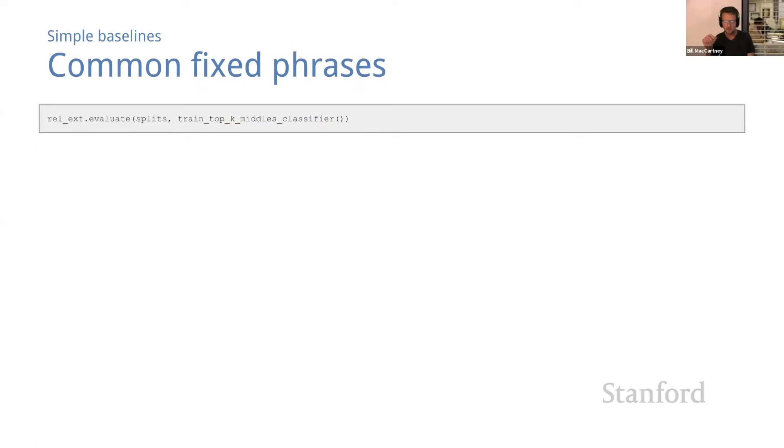Now that we've identified the most common middles for each relation, it's straightforward to build a classifier based on that information—a classifier that predicts true for a candidate KB triple just in case the two entities in the triple appear in the corpus connected by one of the phrases that we just discovered. I don't show the code for that here, but it's in the python notebook for this unit.